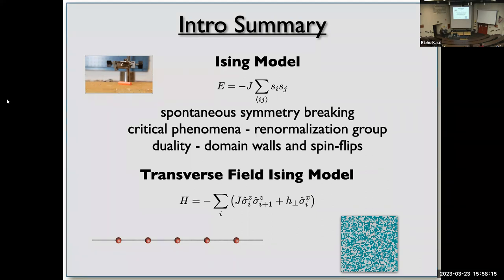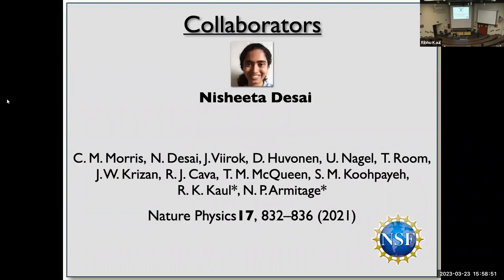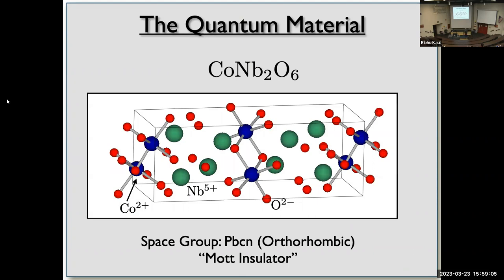Now I'll give a historical example of how complex materials led to fundamental physics through the simple Ising model. My own project follows the same spirit: I found a material, made a model, and found interesting physics. I want to acknowledge my grad student Nishita and my collaborator Peter Armitage, who did the experiments that inspired the theory.